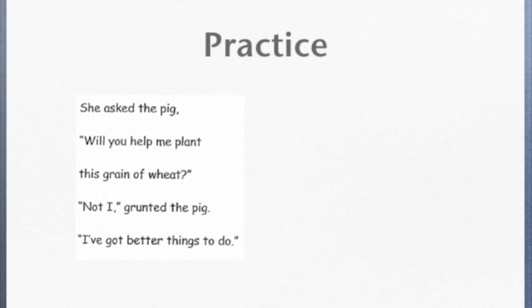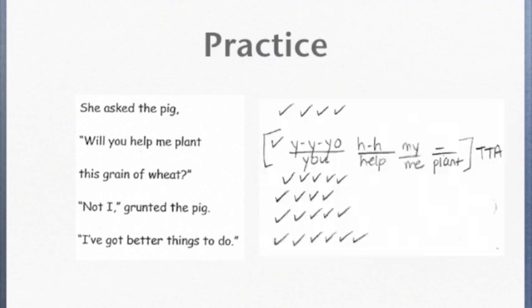If you need to pause before looking at what that running record looks like, please do so. Here's what the try that again, the muddled bracket would look like. I was sounding out the word you, sounding out the word help, said my, omitted the word plant. And at that point, it wasn't making sense, so the teacher says try that again. The second time through, the child read everything accurately. This is only one error. Because remember, it's like a mulligan.